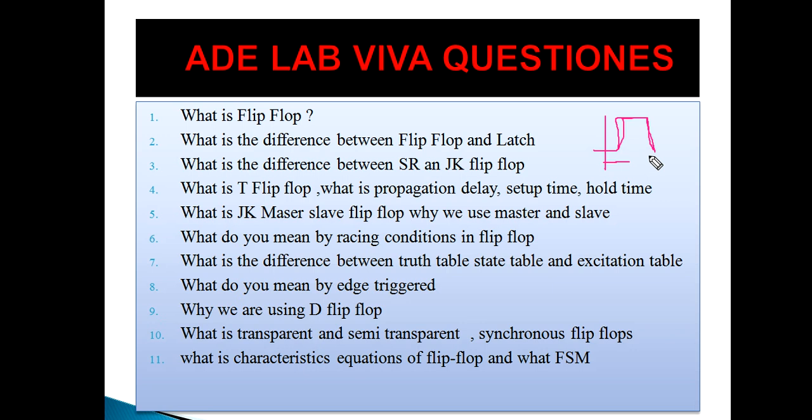In JK master-slave, during the positive cycle the JK master works, and during the negative cycle the slave works. The reason we use both master and slave is to avoid the race around condition. If only one flip-flop is used, during the 1-1 condition the output changes two times during the clock pulse. To overcome this, master and slave are used in combination — this is called the race around condition of the flip-flop.